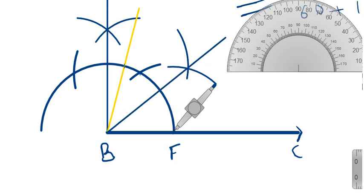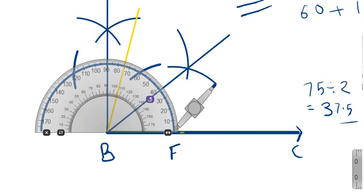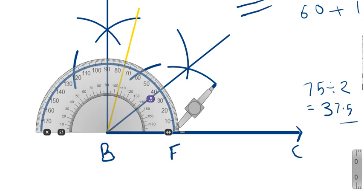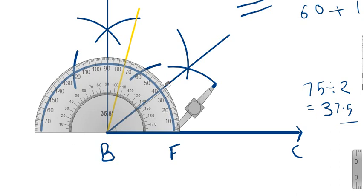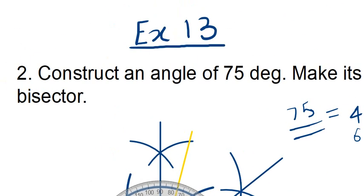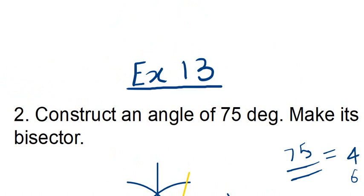Once the arcs are drawn, simply join them together and we get the bisector of 75 degrees. The bisector will be 75 divided by 2, which is 37.5 degrees. We can measure this with the protractor and confirm it comes to 37.5 degrees. Friends, this is all for today — if you are new to my YouTube channel, subscribe and hit the bell icon, and leave a like. Take good care of yourself, bye!